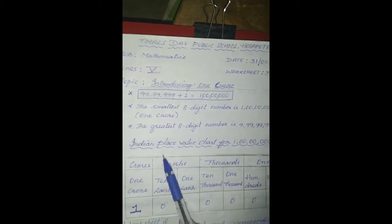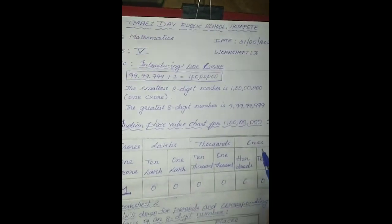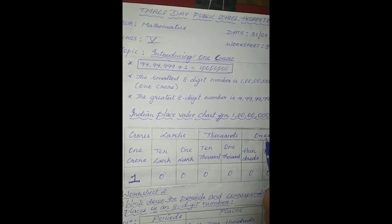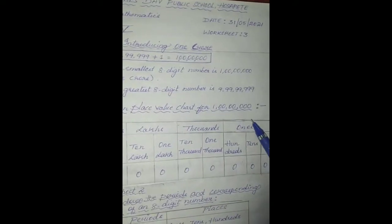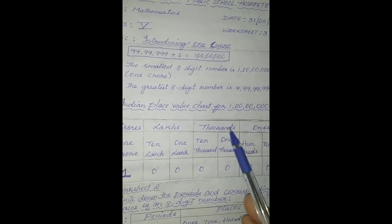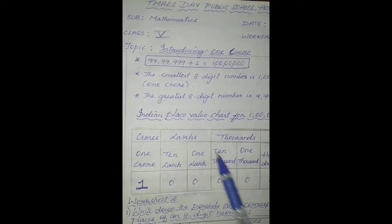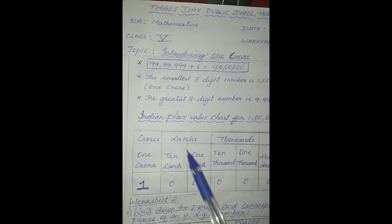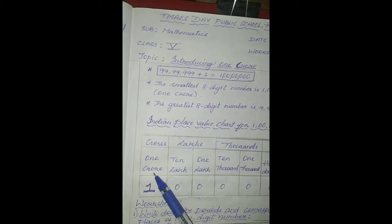How to draw the Indian place value chart for 1 crore. An 8-digit number is divided into 4 periods: the 1s period, the 1000s period, the lakhs period, and the crores period. In the 1s period we get 1s, 10s, and 100s place. In the 1000s period we get 1000s and 10,000s place. In the lakhs period we get 1 lakh and 10 lakhs. And in the crores period we get 1 crore.